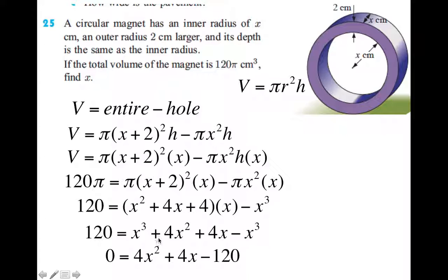And I move the 120 over as well. So I end up with this easy to solve quadratic equation. Everything can be divided by 4. So that's the next step here. Reduce it by dividing by 4.